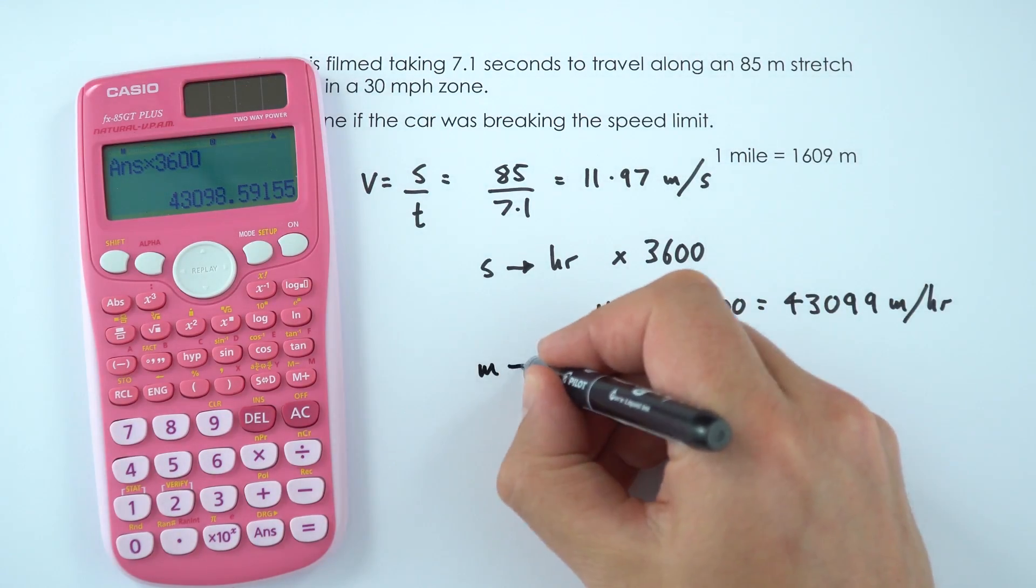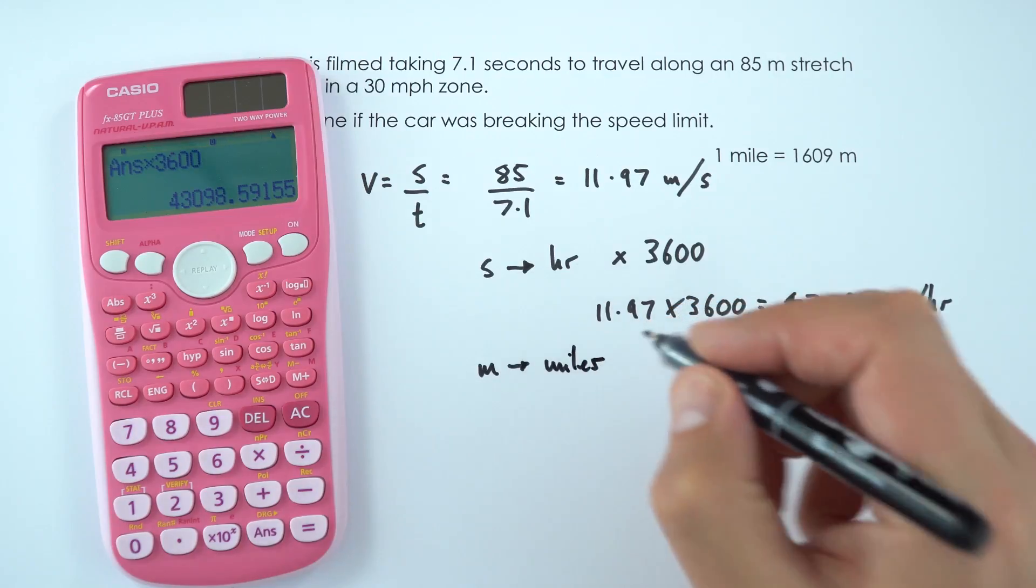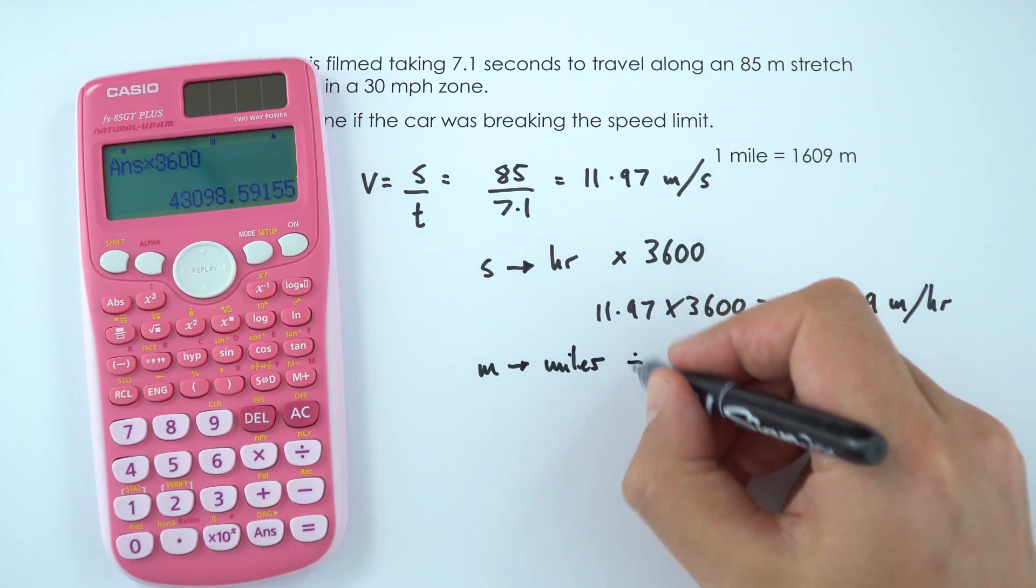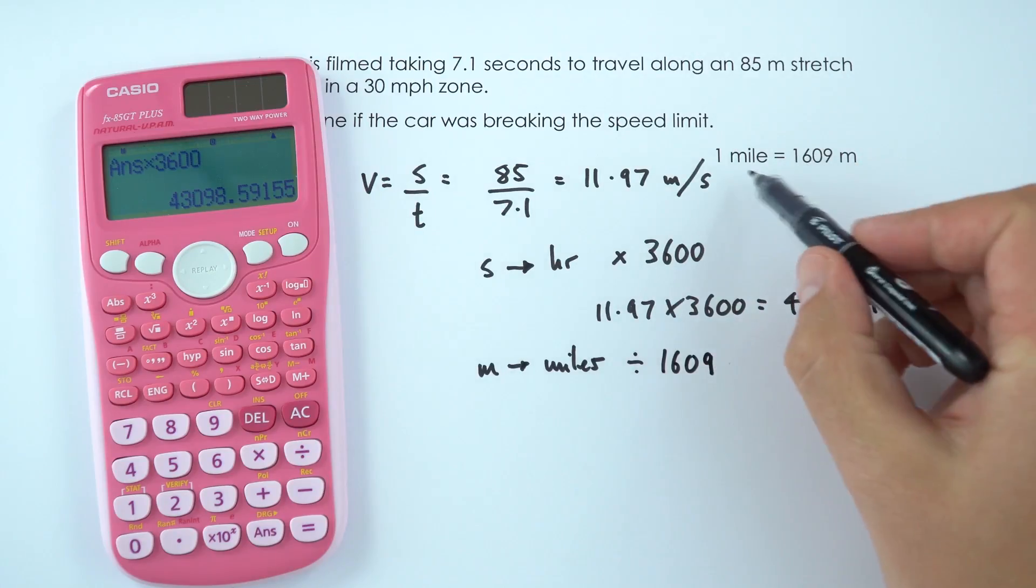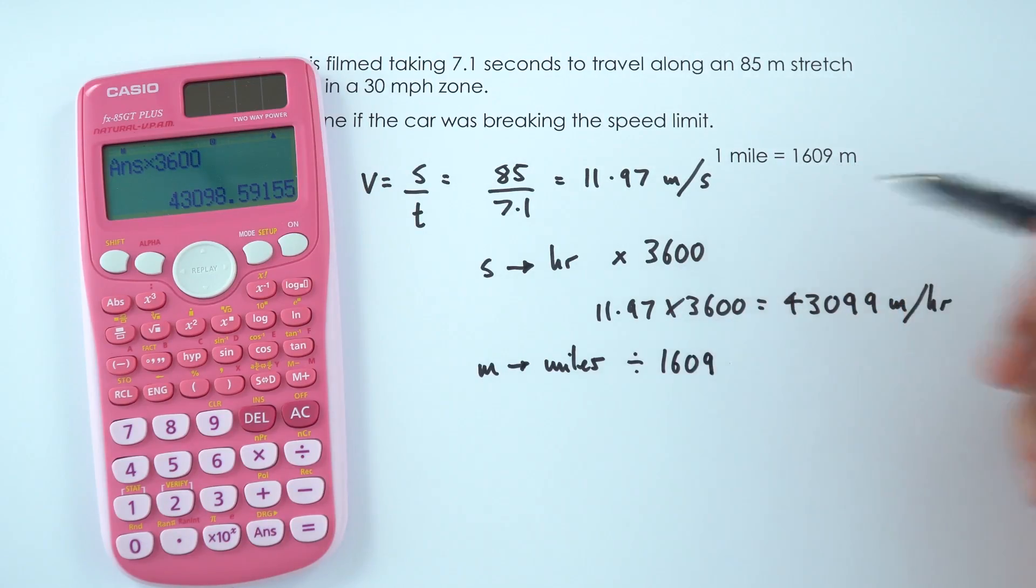So to go from metres into miles, what I'm going to be doing is dividing by this conversion factor of 1609. And again, this is given to us in the question, you don't have to remember that off the top of your head.